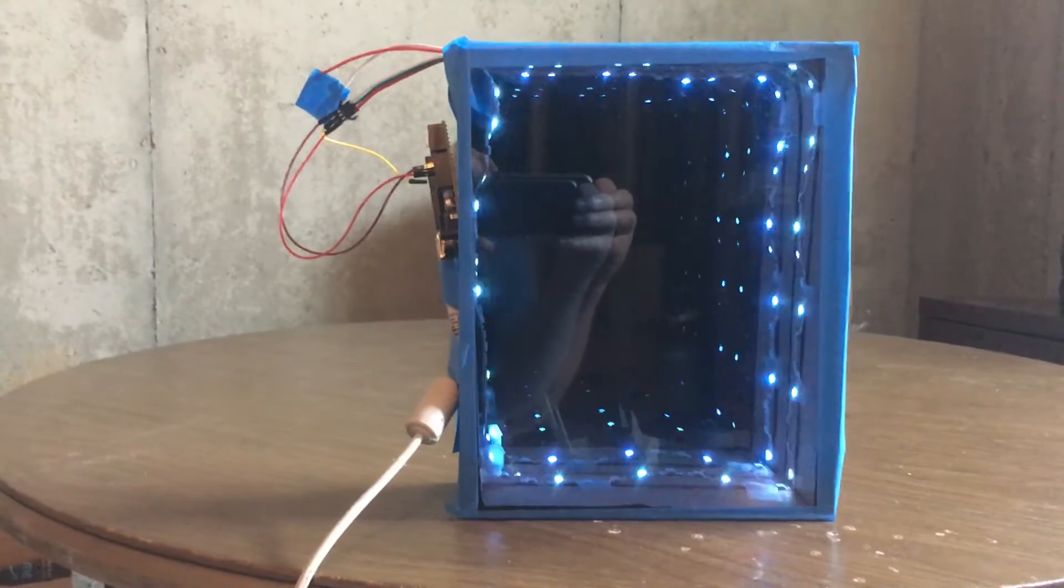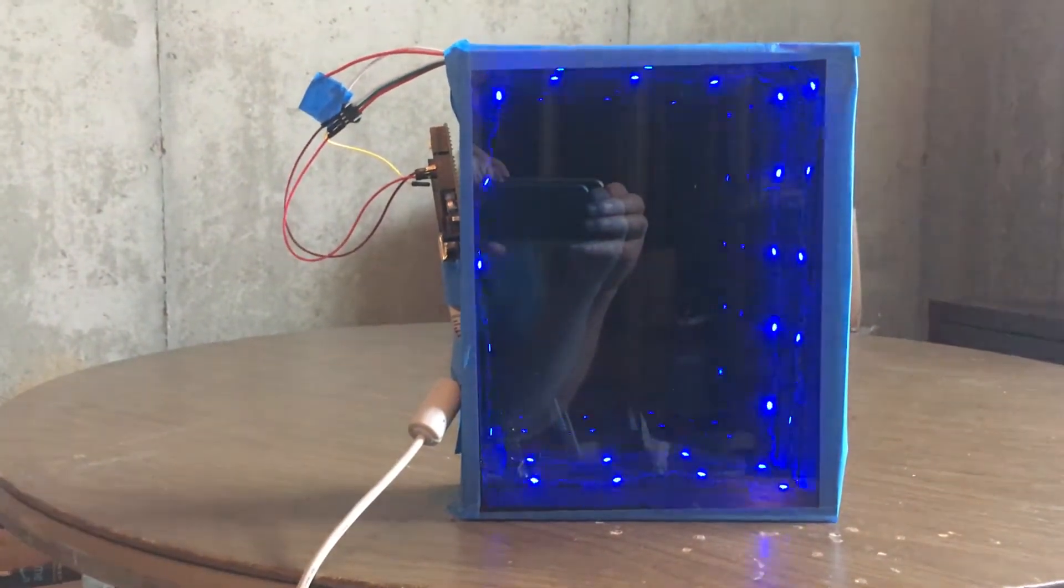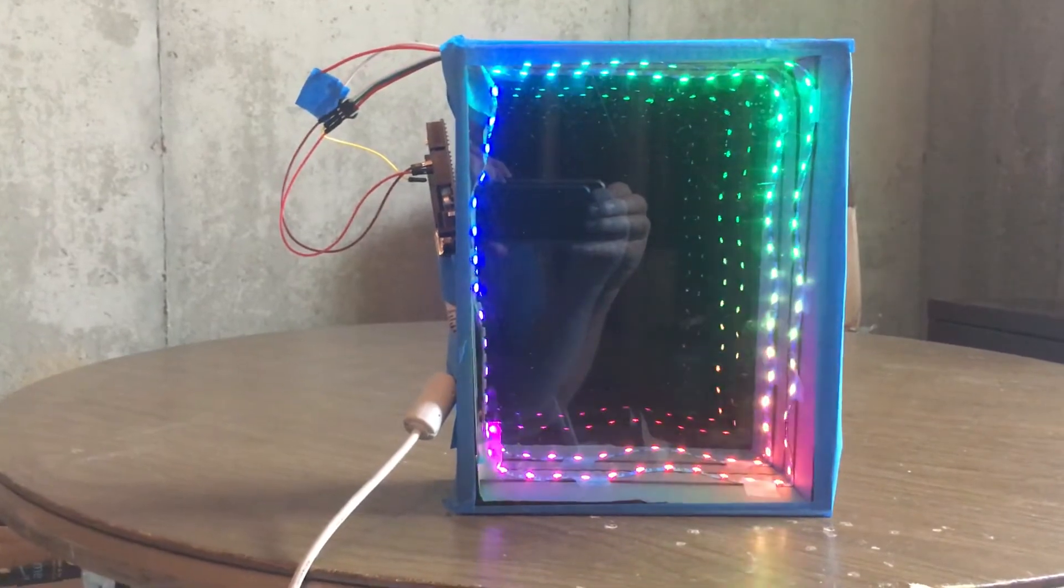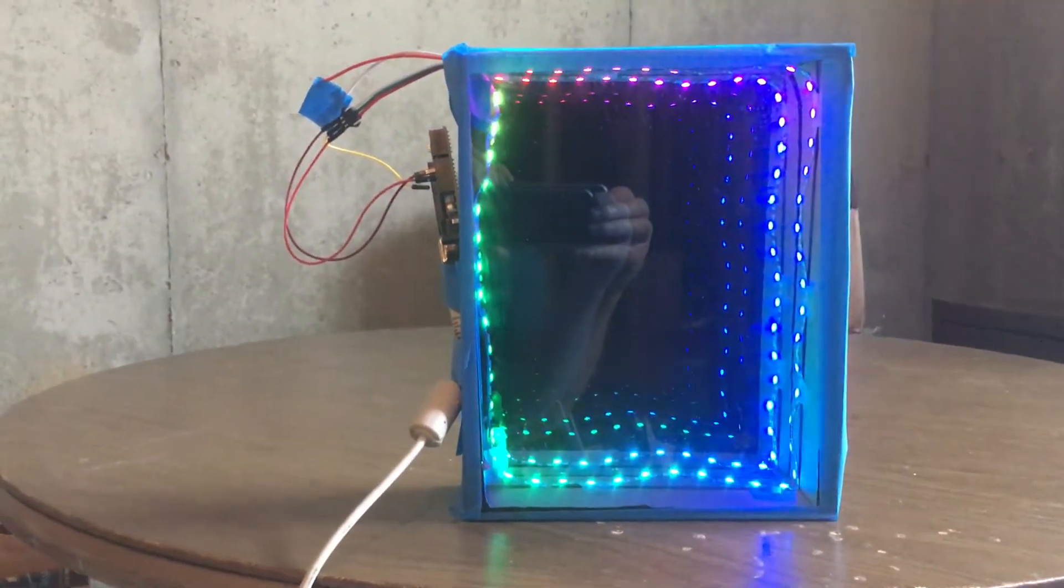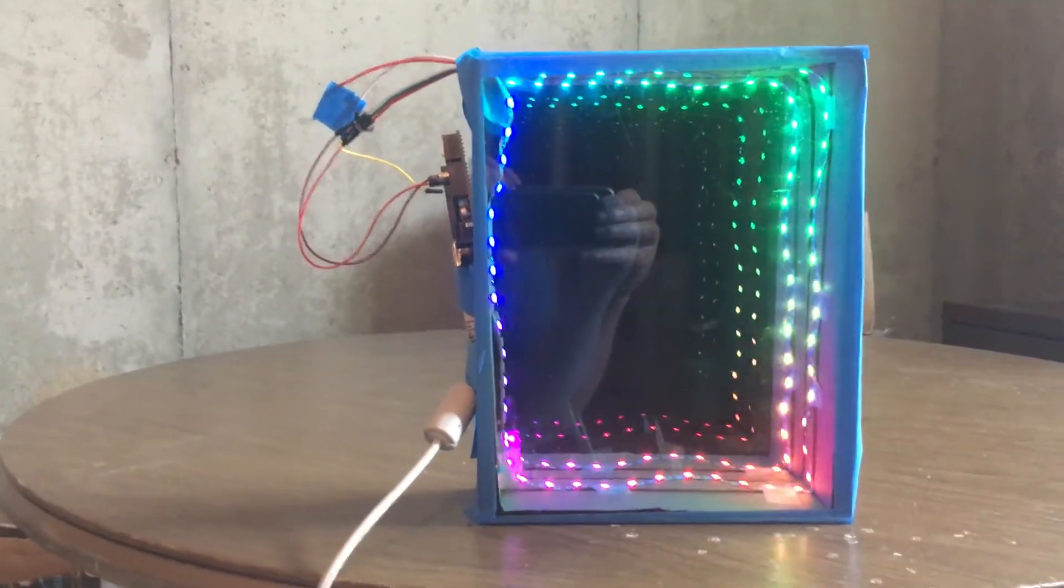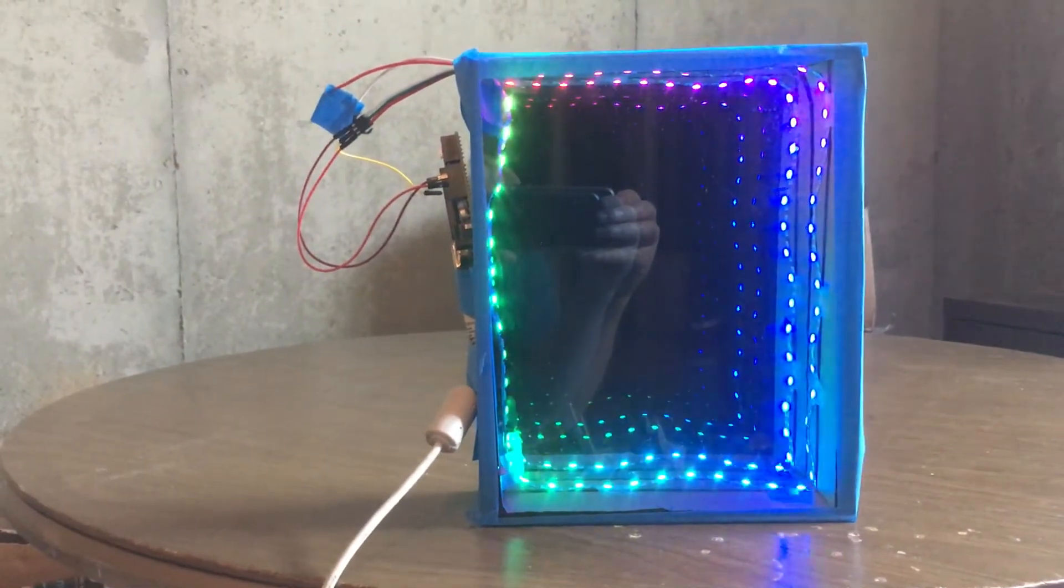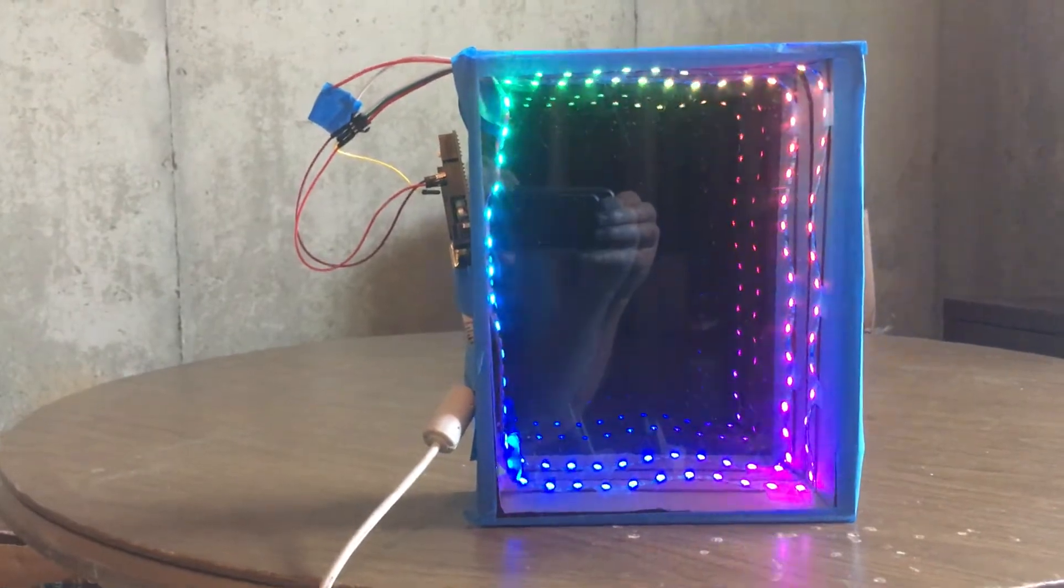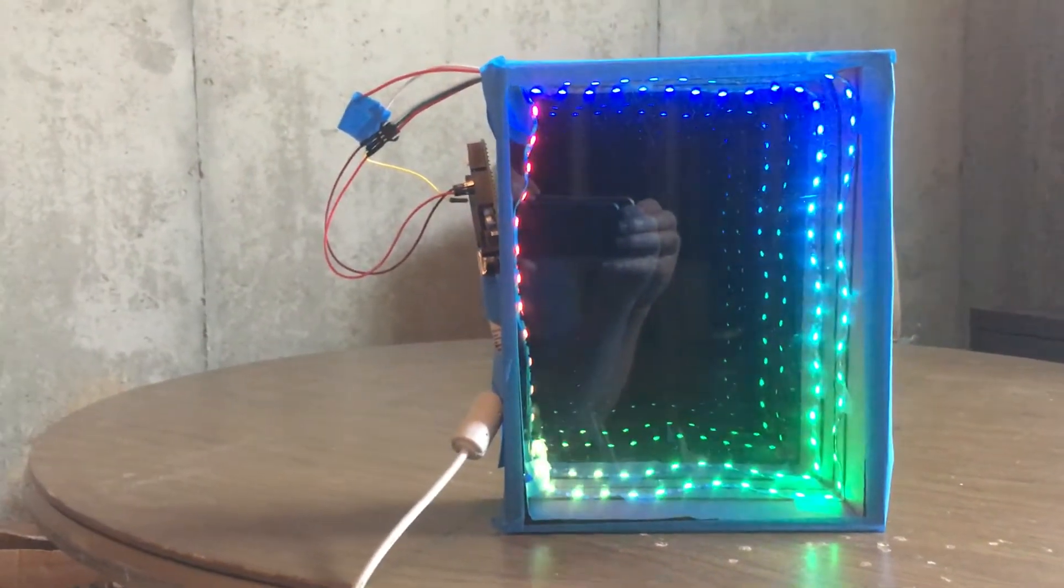We're going to be creating a two-way mirror using some windshield tinting material. And then we'll be using a regular mirror as well to reflect and make one strip look like multiple strips disappearing back into the back of the box.